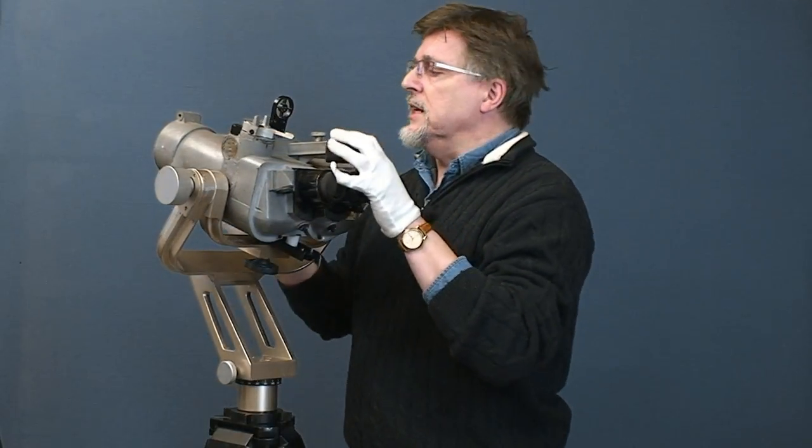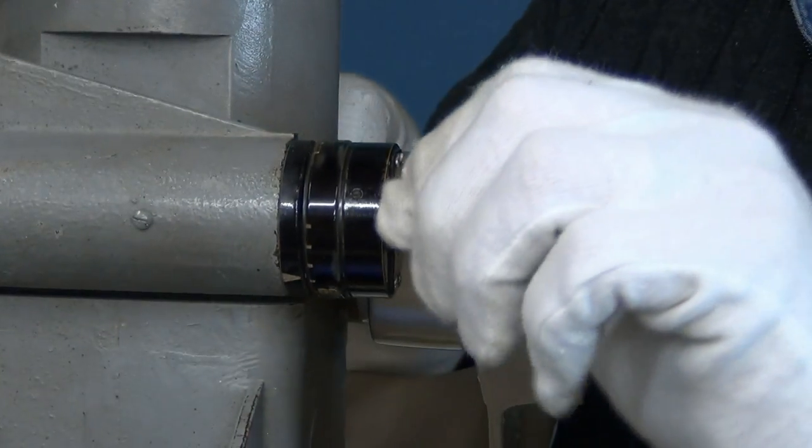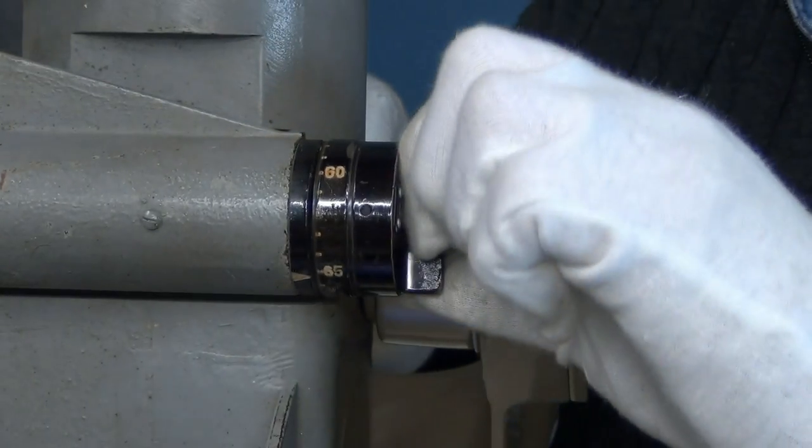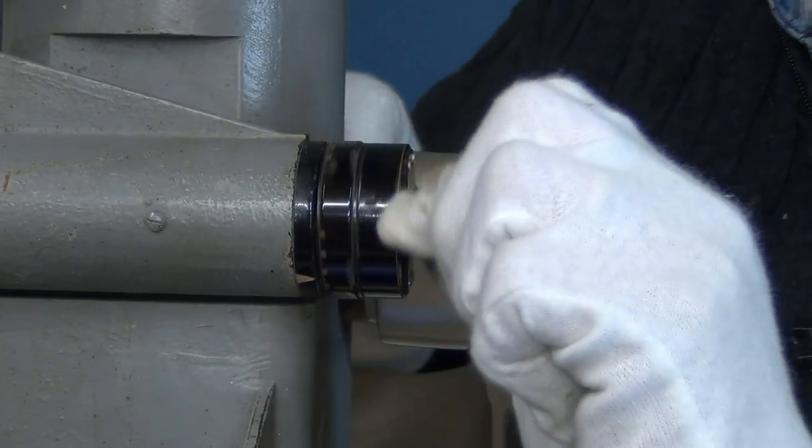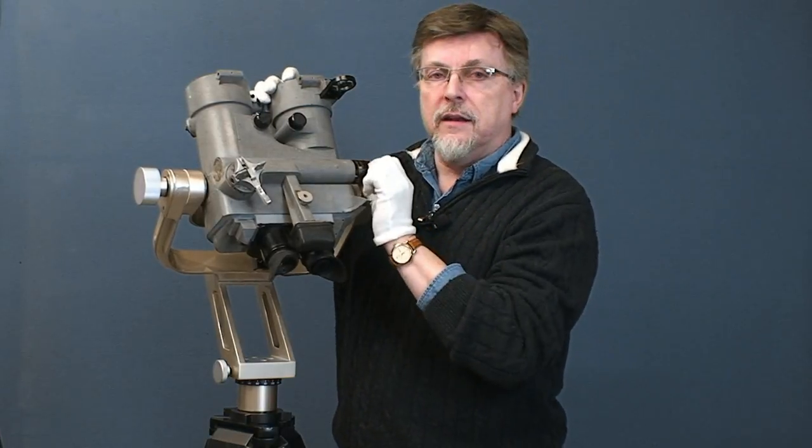The interocular adjustment is achieved with the knob on the side here. That's just a simple twist and you can see on the edge here we've got numbers so that the user can remember his number when it's his turn to use the binocular and just dial that in so that he's ready to go straight away.